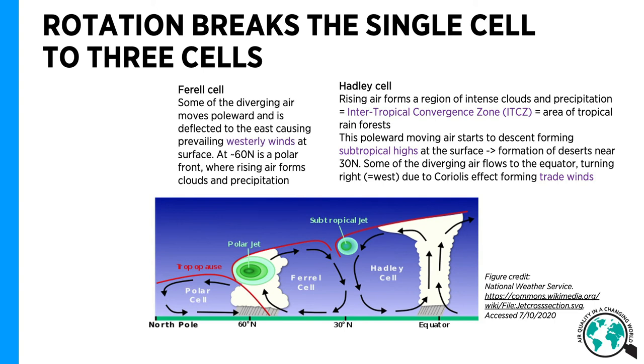And some of the diverging air flows poleward and turns to the east, causing the prevailing westerly winds at the surface.